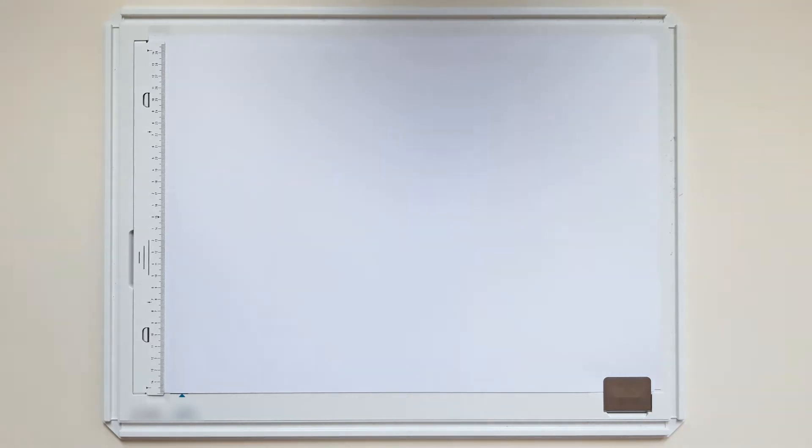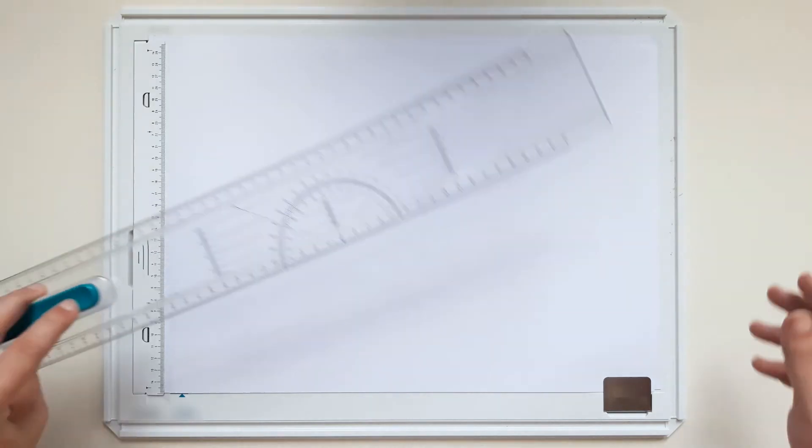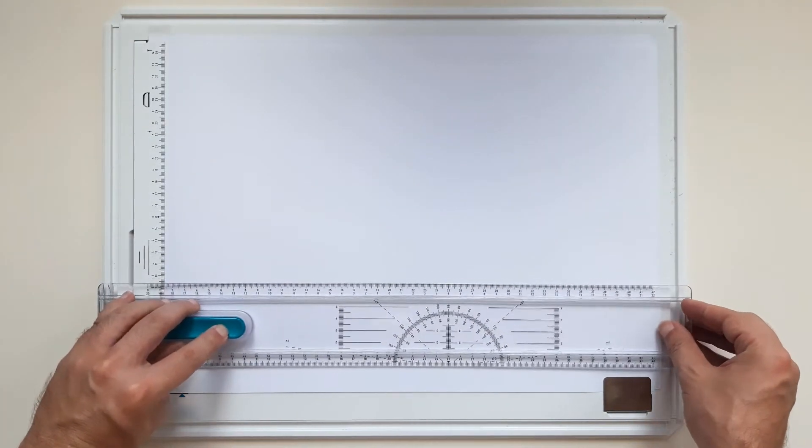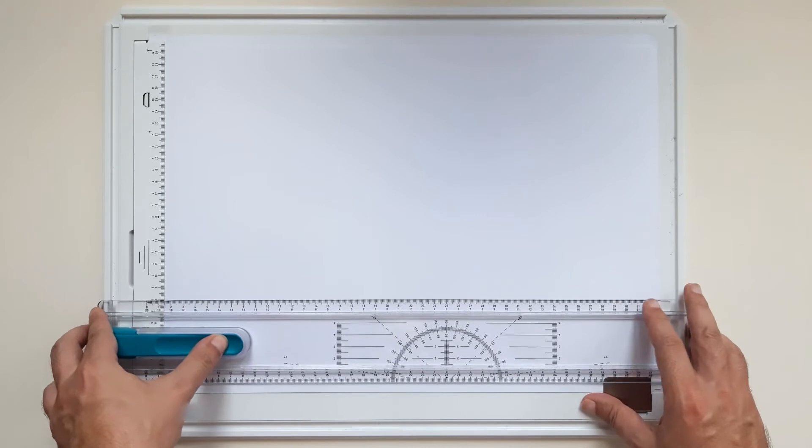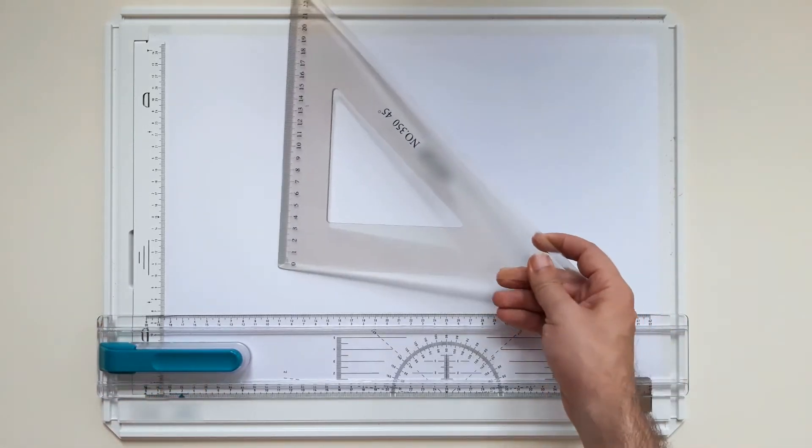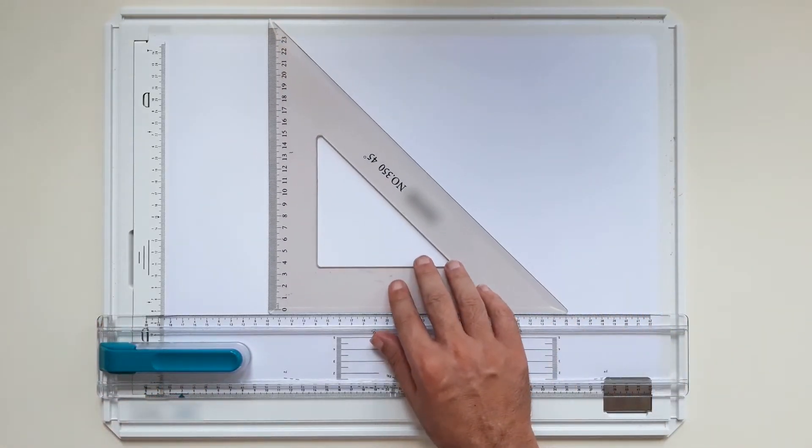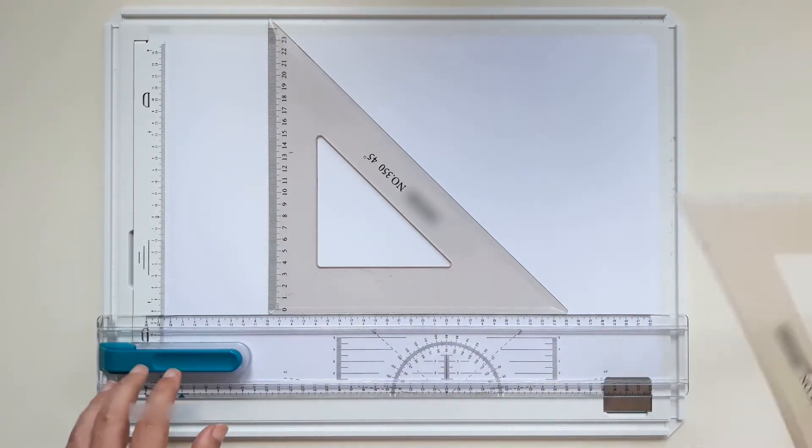So this is another video on using set squares, but this time we are going to learn how to draw using both set squares at once in order to draw an angle of 75 degrees and an angle of 105 degrees.